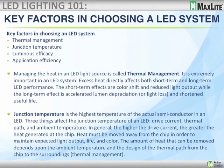Key factors when choosing an LED system: thermal management, junction temperature, efficiency, and application efficiency. Managing the heat in the light source is called thermal management — it's extremely important. Excess heat directly and negatively impacts product life, can cause color shifting, and overall dissatisfaction. The junction temperature is the highest temperature allowed on the actual LED itself. Three things affect junction temperature: the driver current, the thermal path, and the ambient temperature. In general, the higher the drive current, the greater the heat. Heat must be moved away from the chip at the rate it's being generated to maintain expected output, life, and color.